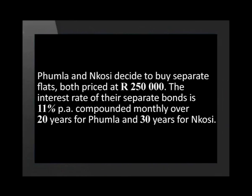Let's practice using this formula together. Pumla and Nkosi decide to buy separate flats, both priced at R250,000. The interest rate on their separate bond is 11% per annum, compounded monthly — over 20 years for Pumla and 30 years for Nkosi. Let's determine the equal monthly installments if they pay their first installment one month after the bond was granted.